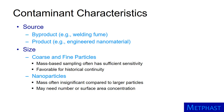We also need to know the particle size range we are interested in. For coarse and fine particles, mass-based sampling often has enough sensitivity for detection because these particles have sufficient mass to weigh. Gravimetric sampling is favorable because of historical continuity to past measurements. In contrast, other types of instruments are often needed because the mass of nanoparticles is insignificant compared to larger particles. In this case, we either need new samplers to collect nanoparticles alone, or instruments that measure number or surface area concentration.